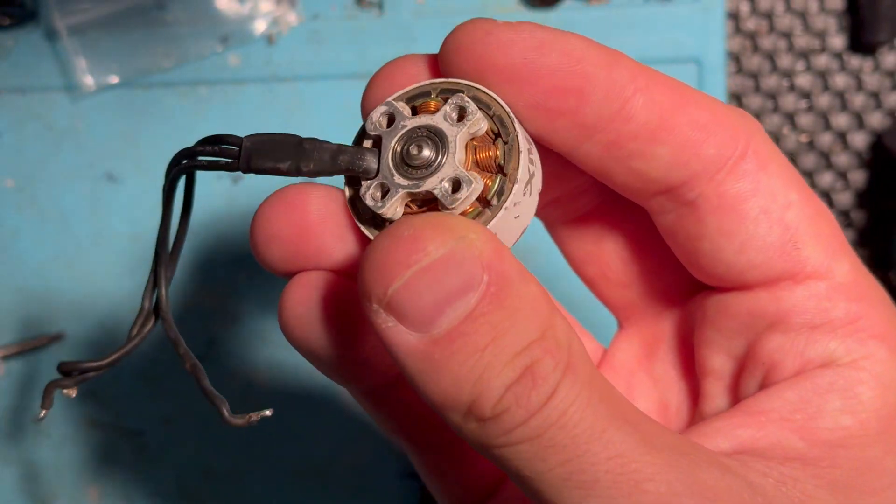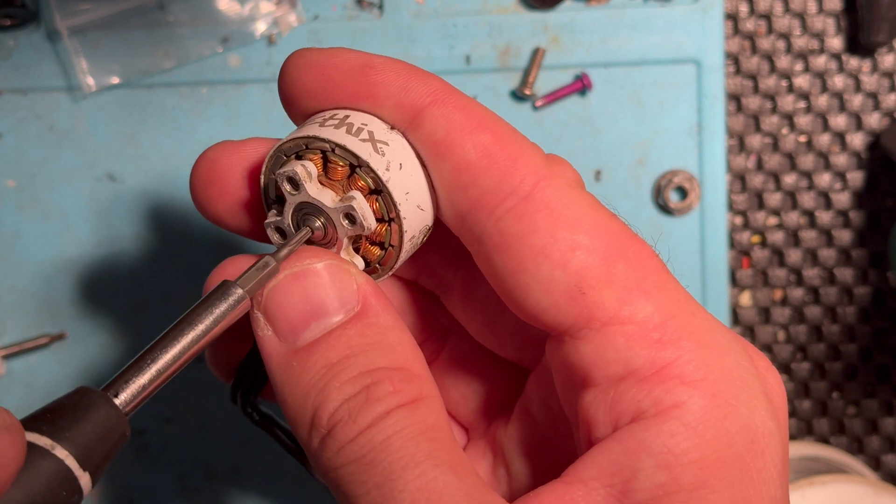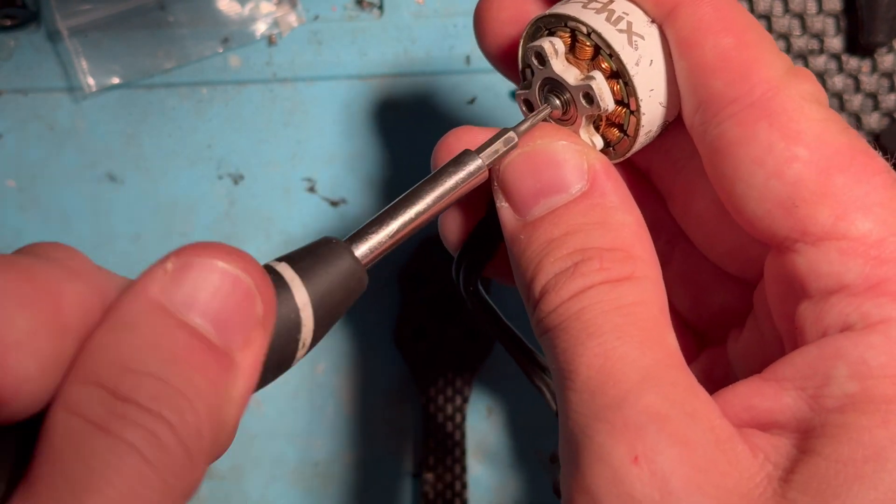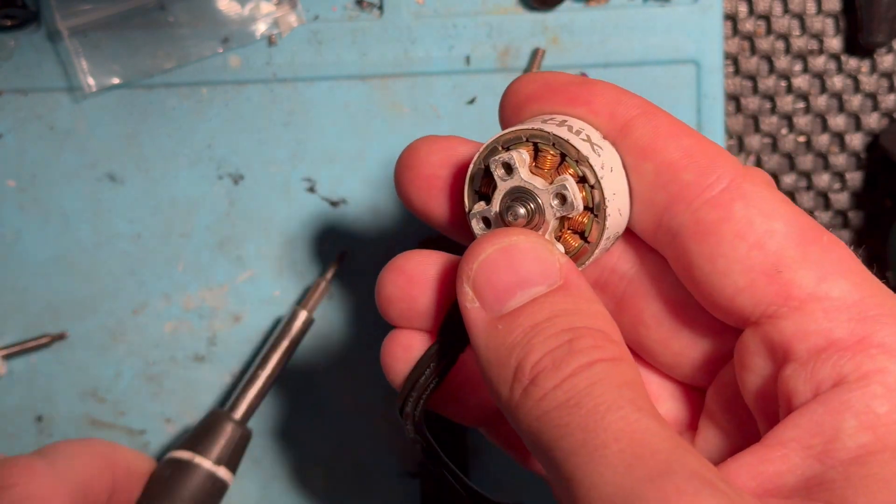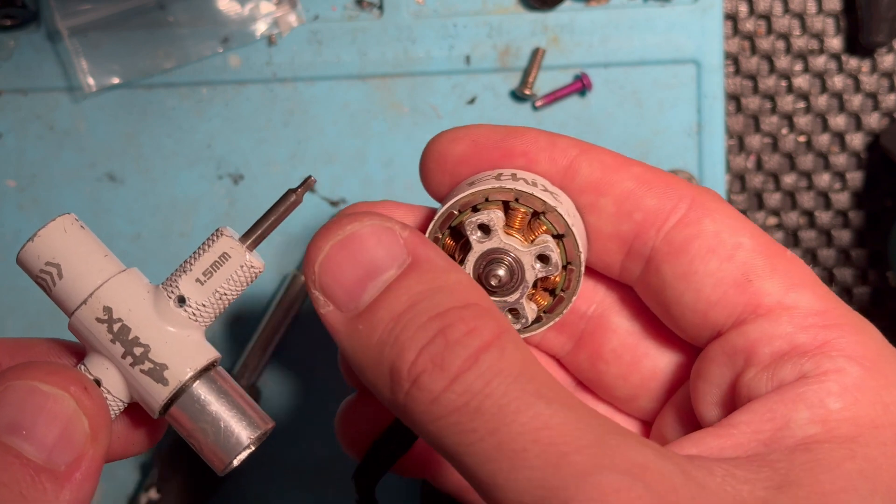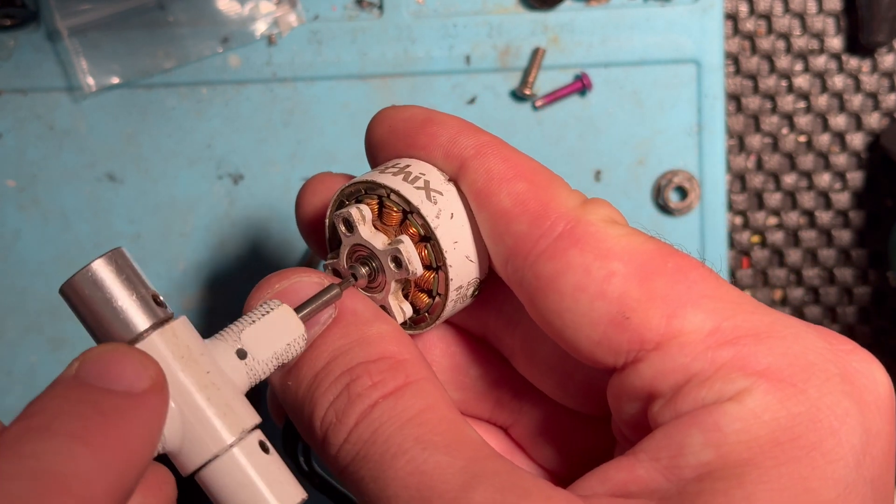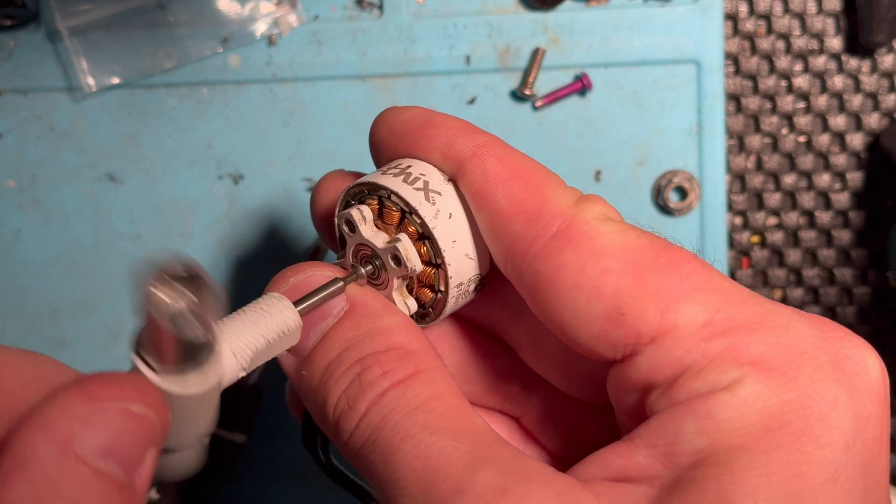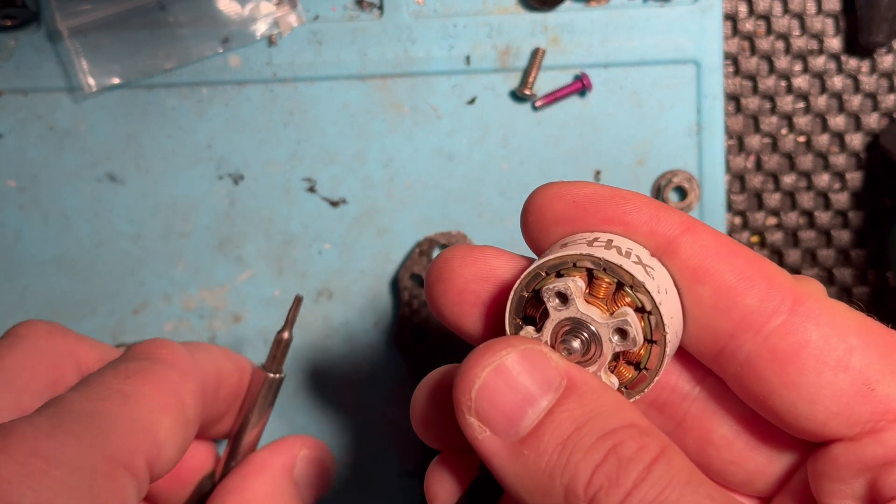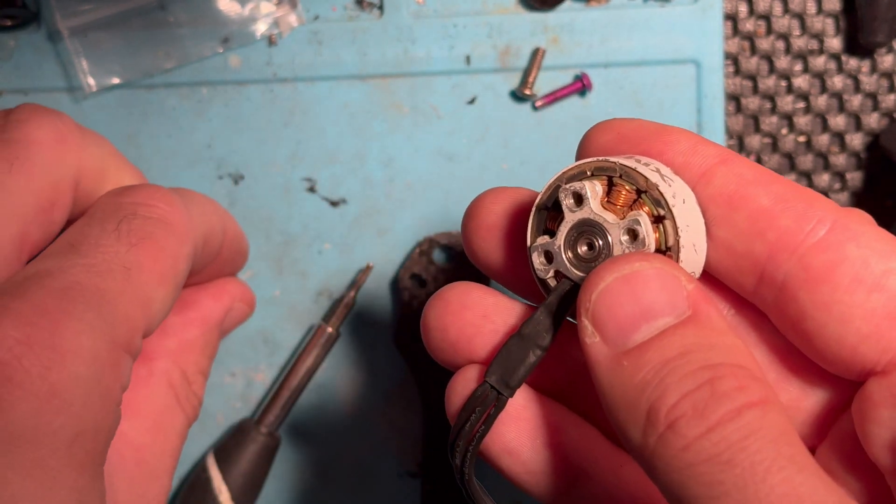All right, so we've got our motor and we've got a 1.5 mil screw that we need to get out. I either use this little Husky driver here or I'll use the iFlight tool. It's got actually a really hard metal that it uses. Sometimes I find that these drivers are a little soft. You can end up actually stripping the screw. So anyway, we're going to take this off.